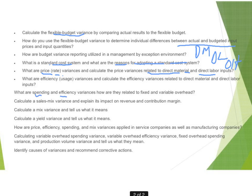Spending and efficiency variances are for the overhead. That's kind of difficult to test on — they may give you a multiple choice question in that area, but there certainly wouldn't be an applications problem. Sales mix variance can also come in as multiple choice questions, but in terms of an essay problem, no — you focus on the variances in direct material and direct labor. Know the overhead spending variance and efficiency variance terminology, but you're not really going to be asked to calculate that.